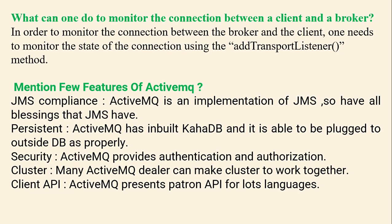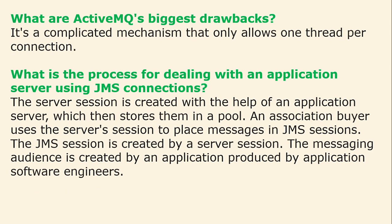Mention a few features of ActiveMQ: It is JMS-compliant — ActiveMQ is an implementation of JMS, so it has all the benefits that JMS provides. It is Persistent — ActiveMQ has built-in KahaDB and can also plug into an external database. It provides Security — authentication and authorization. It supports Clustering — multiple ActiveMQ brokers can form a cluster to work together. It offers a Client API — ActiveMQ provides pattern APIs for many languages. Regarding drawbacks, ActiveMQ is a complicated mechanism that only allows JMS connections and has only one thread per connection.